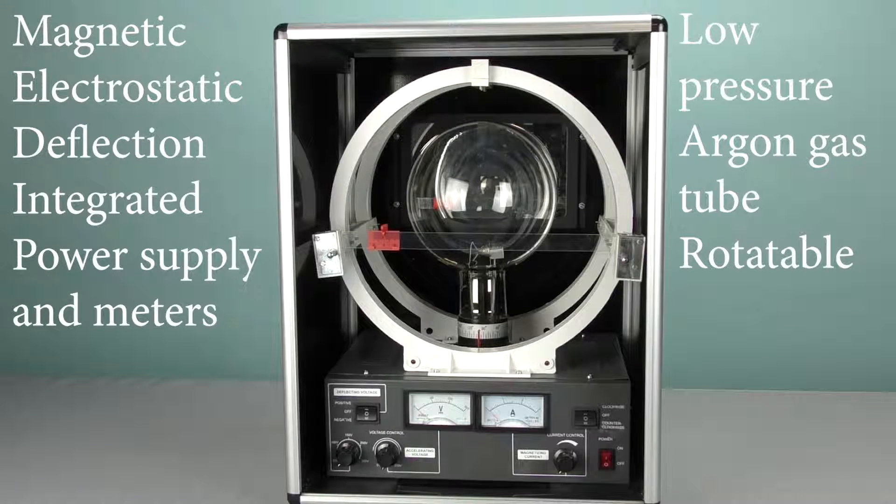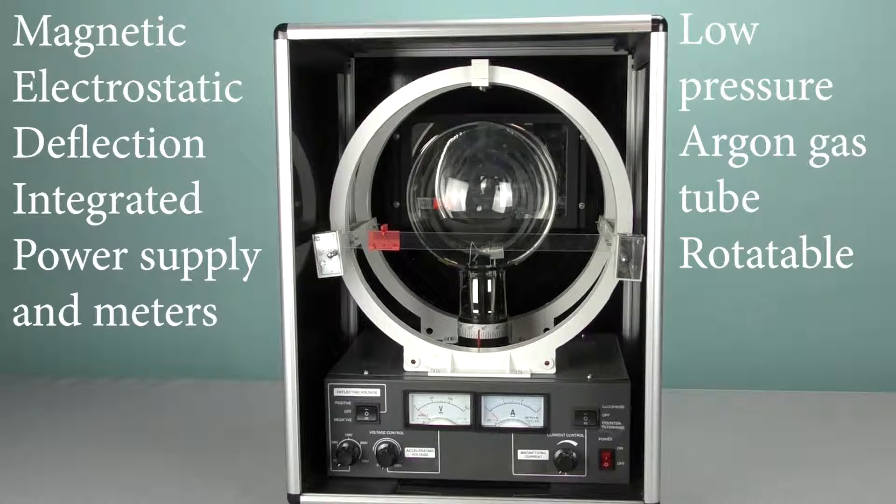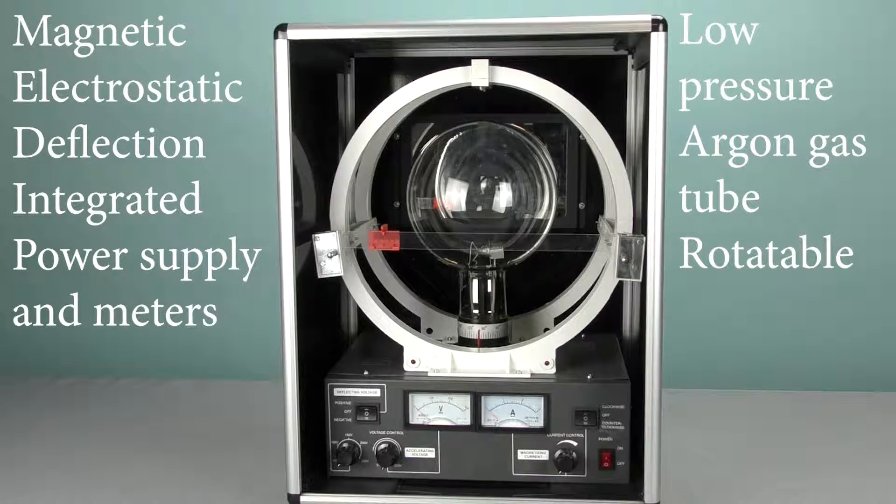The low-pressure tube contains argon gas, and the tube can be rotated from zero to 90 degrees with respect to the Helmholtz coils.